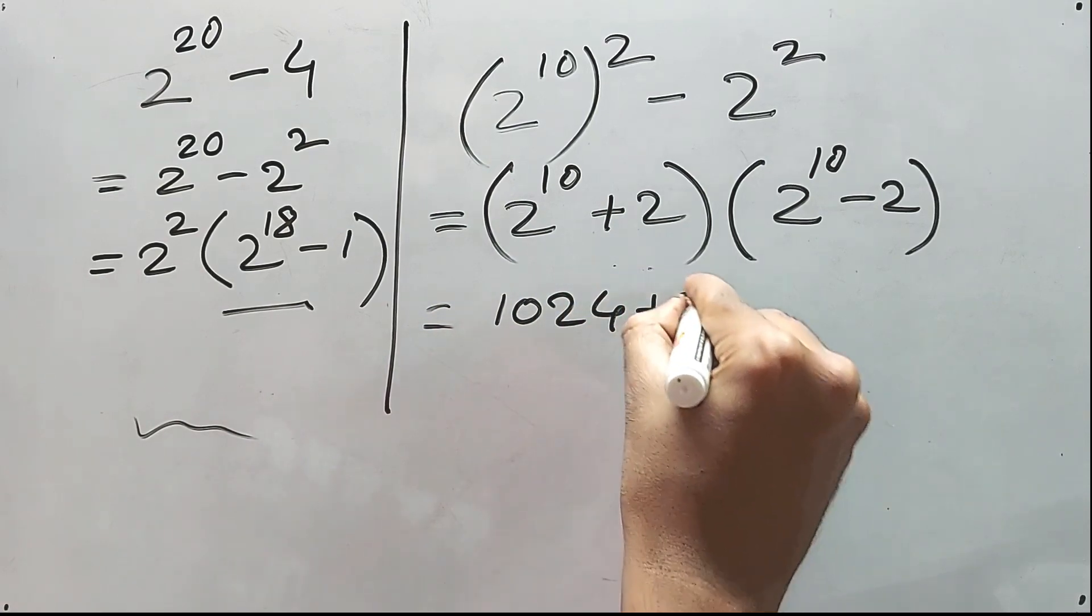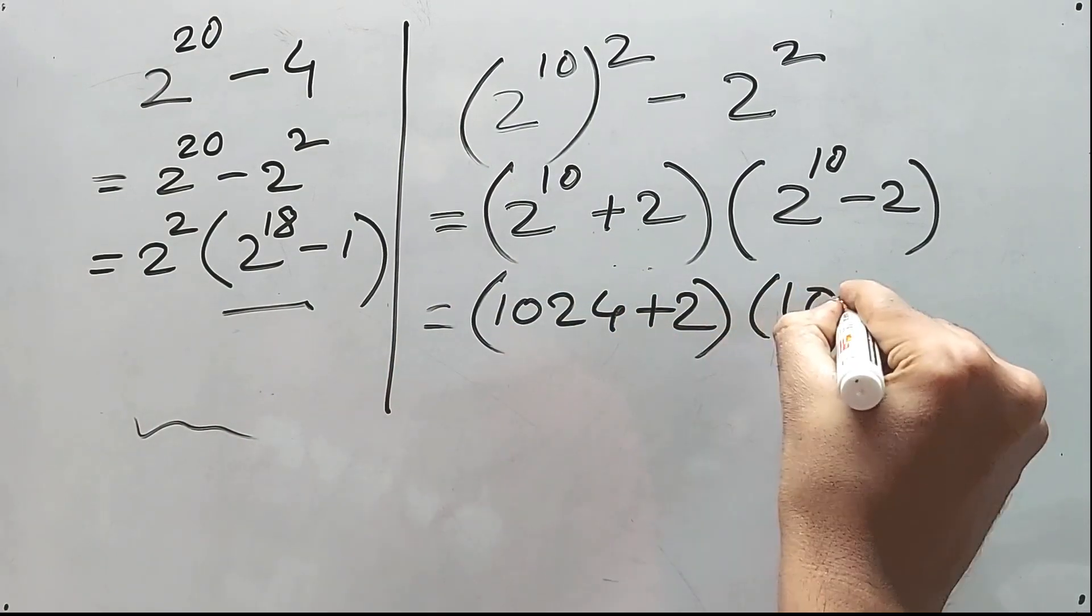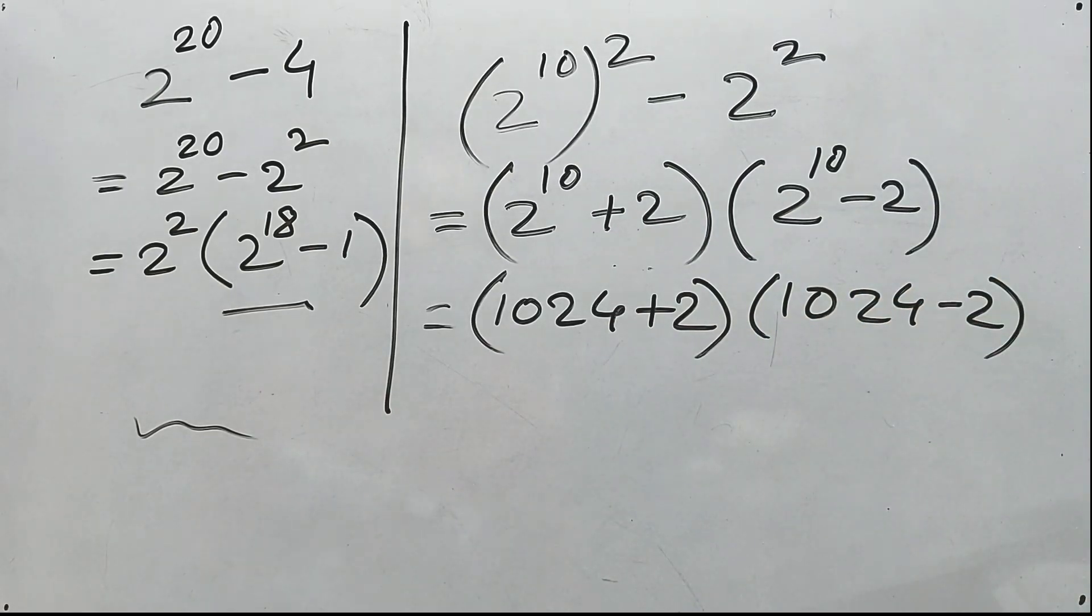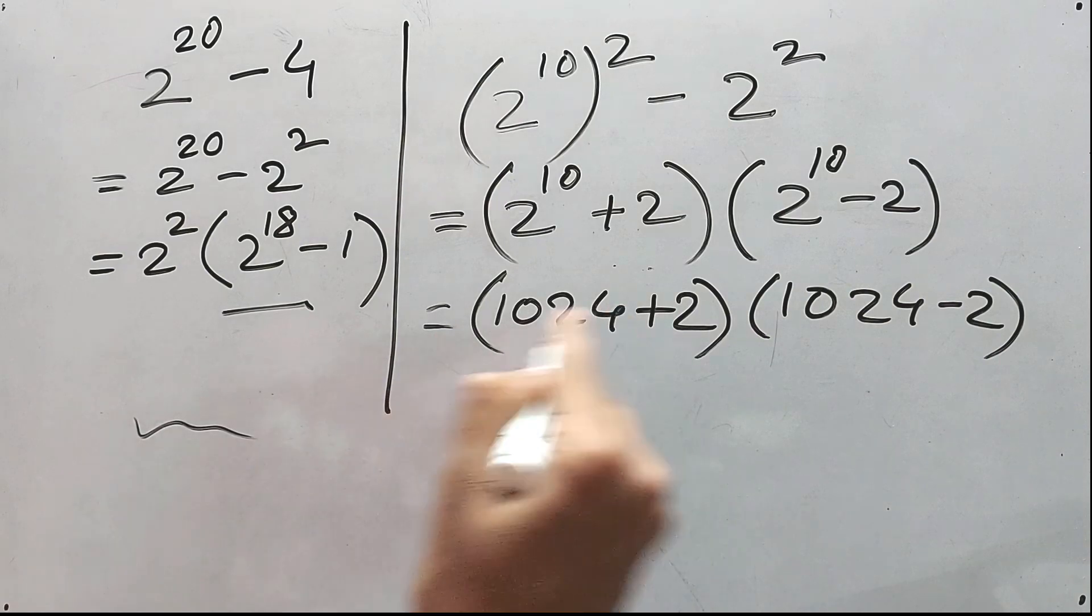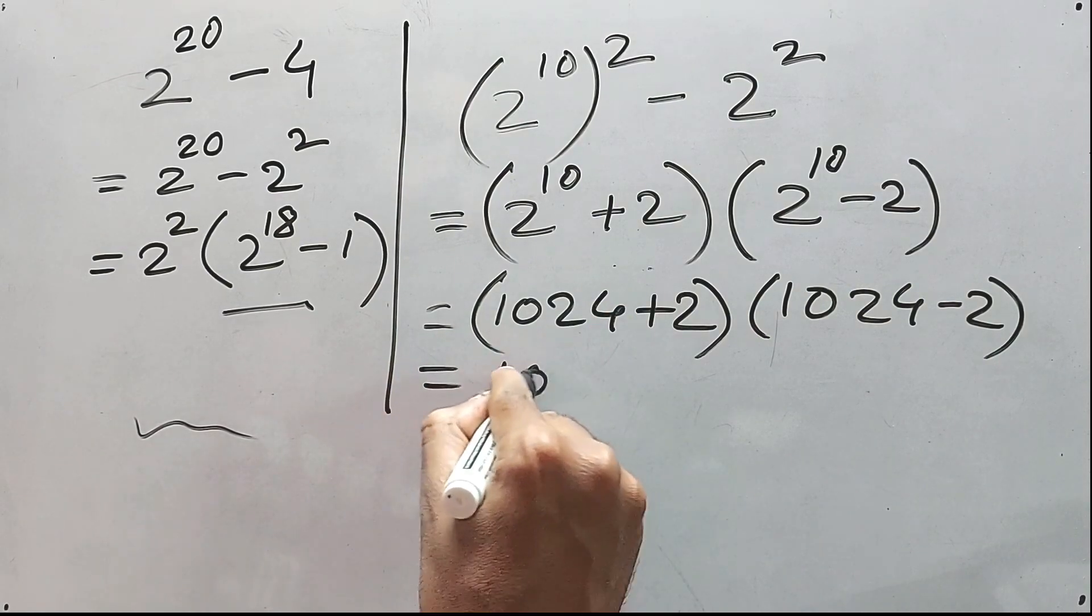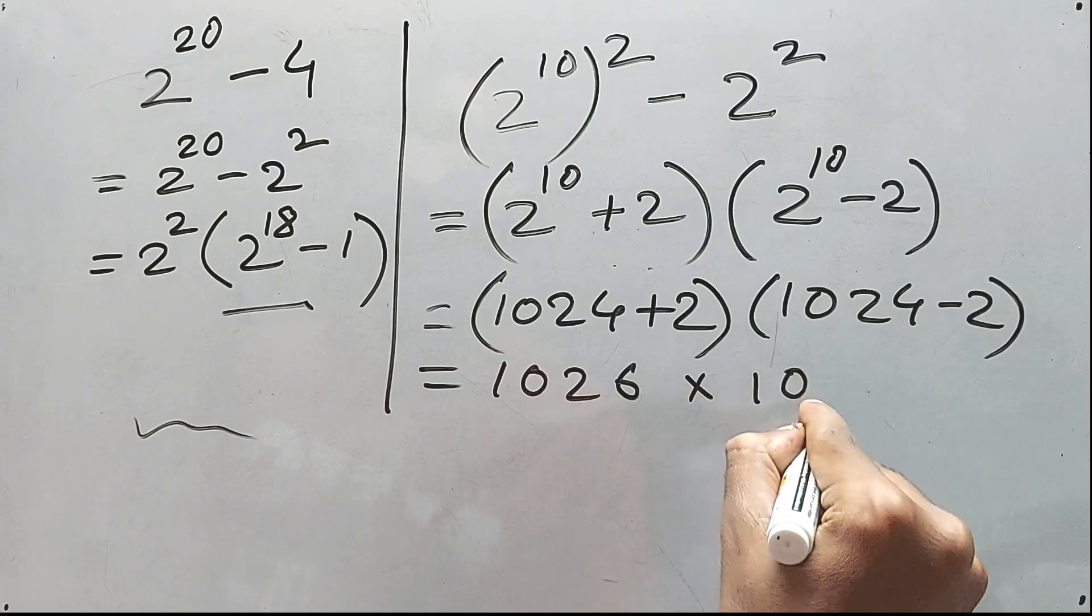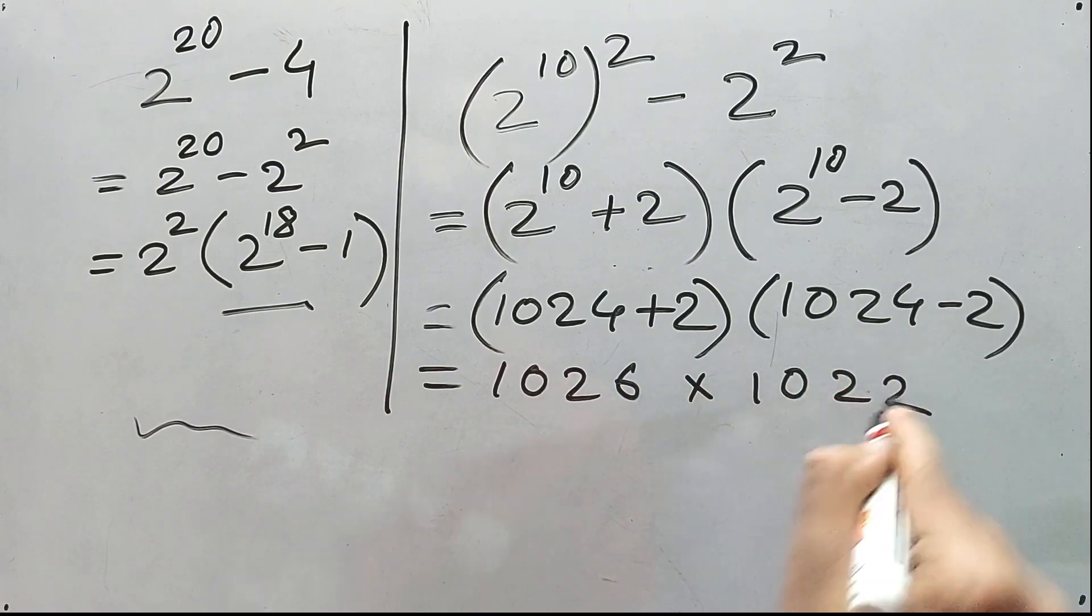That means 1024, right? 1024 plus 2 and 1024 minus 2. Clear?